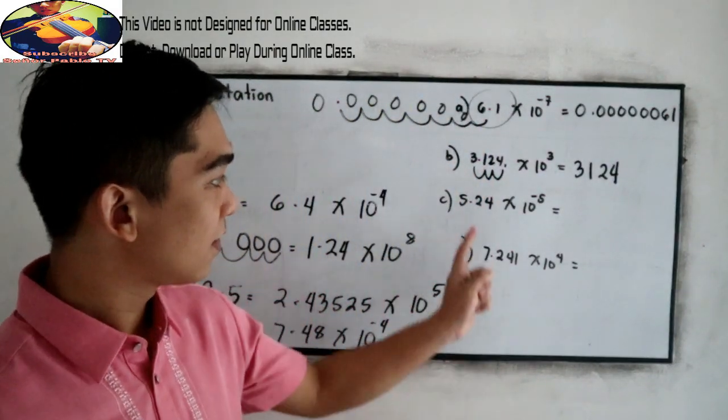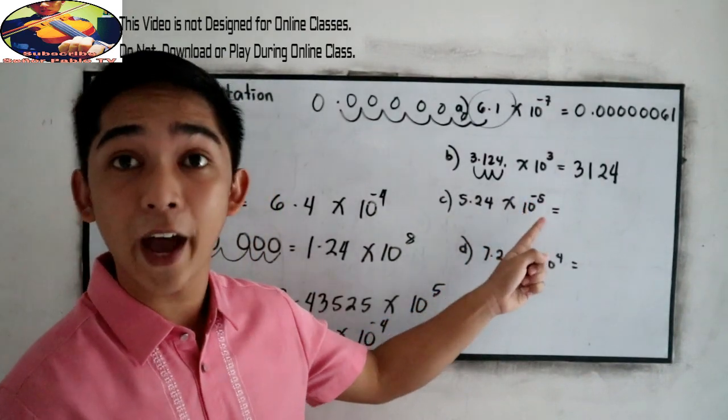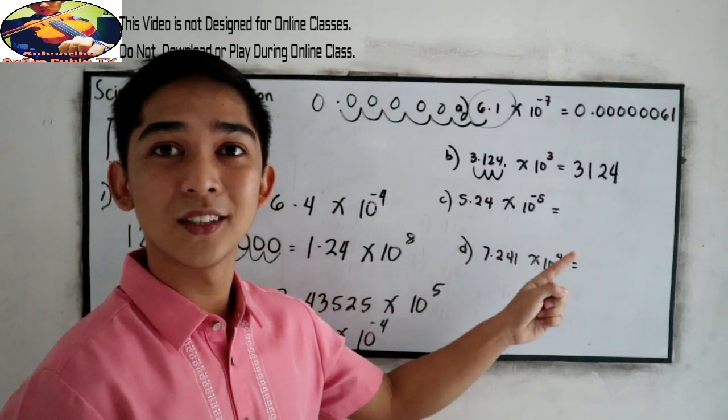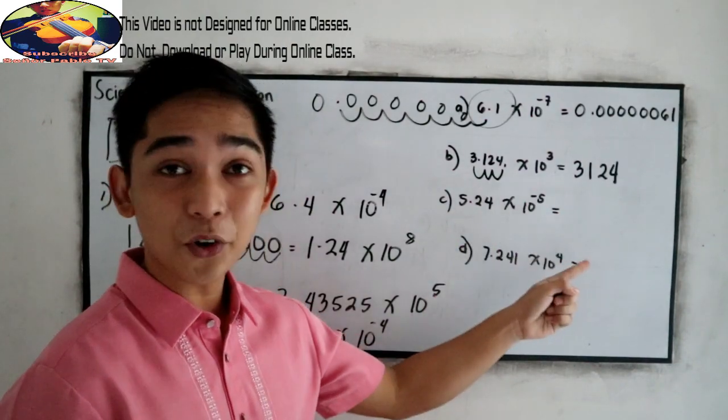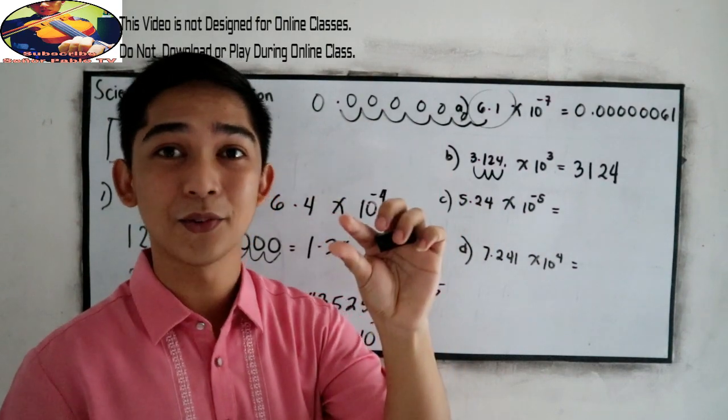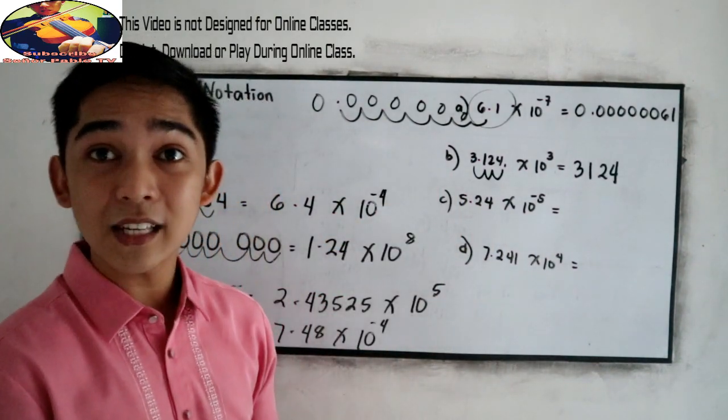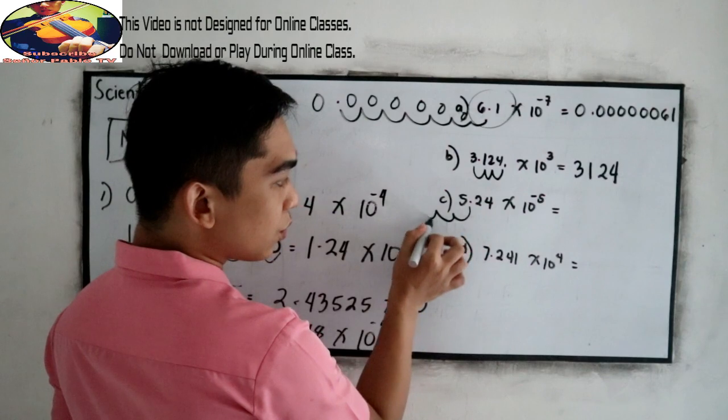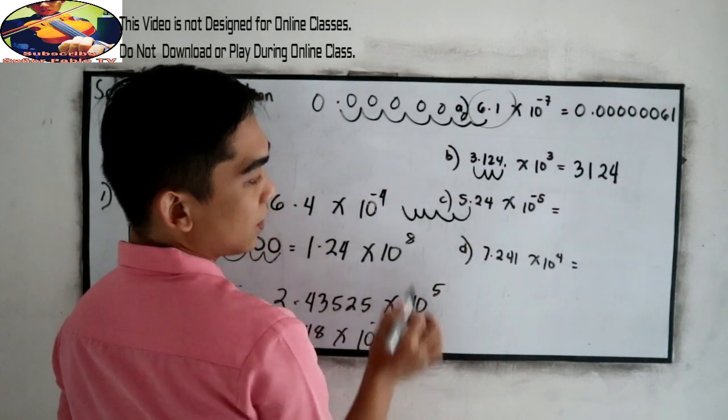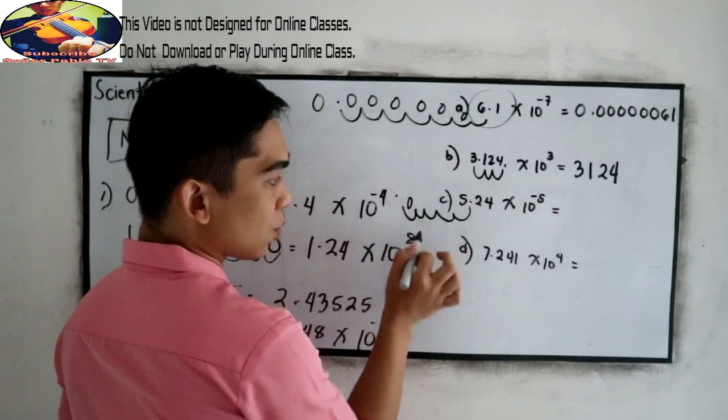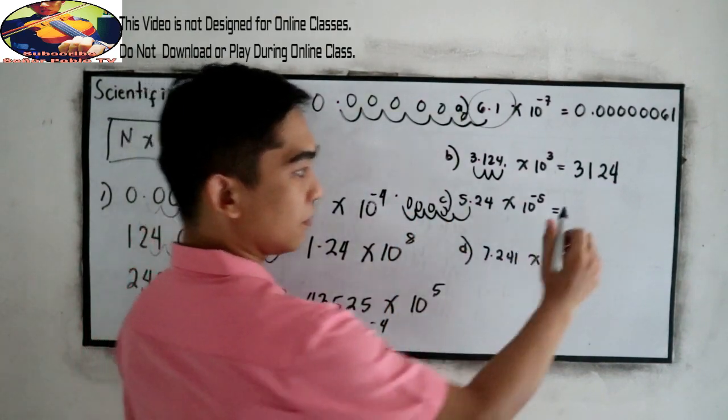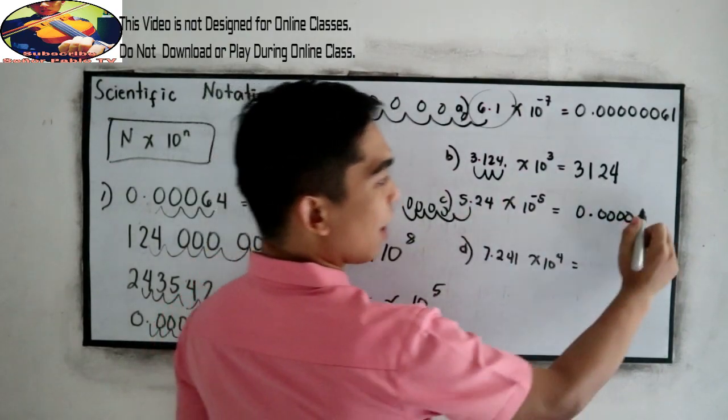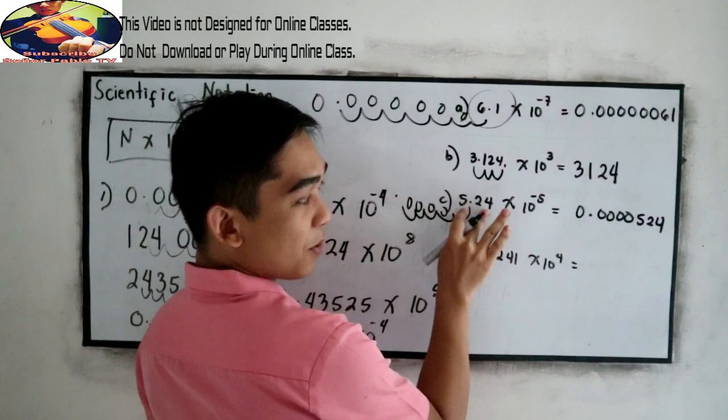Next, 5.24 times 10 raised to negative 5. So negative 5. If we're going to write into decimal form, that will give us a least value. So we're going to move the decimal to the left 5 times: 1, 2, 3, 4, 5. And write period. Then fill this to zeros: 1, 2, 3, 4. So 0 point, then 1, 2, 3, 4 zeros. Then we have 5, 2, 4.